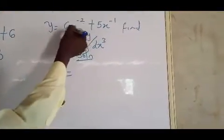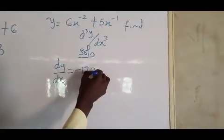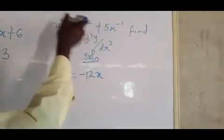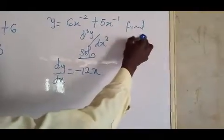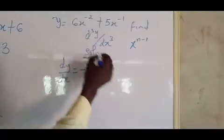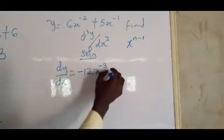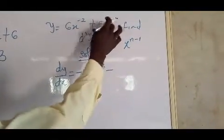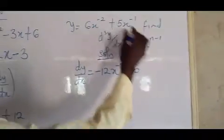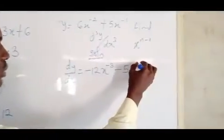For dy/dx: minus 2 times 6 gives minus 12, and the power becomes x^(−2−1) = x⁻³. Then minus 1 times 5 gives minus 5, and the power becomes x^(−1−1) = x⁻². So dy/dx = −12x⁻³ − 5x⁻².